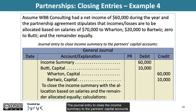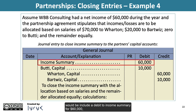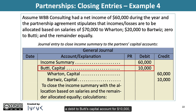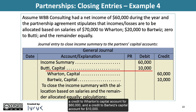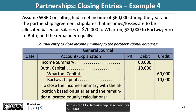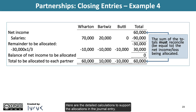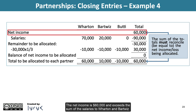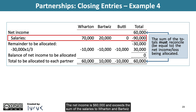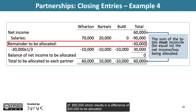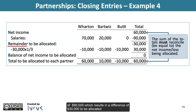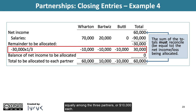The journal entry to close the income summary to the partners' capital accounts would include a debit to income summary for $60,000, a debit to Beauty's capital account for $10,000, a credit to Wharton's capital account for $60,000, and a credit to Bartwiz's capital account for $10,000. The net income of $60,000 is less than the sum of the salaries to Wharton and Bartwiz of $90,000, which results in a difference of $30,000 to be allocated equally among the three partners, or $10,000 each.